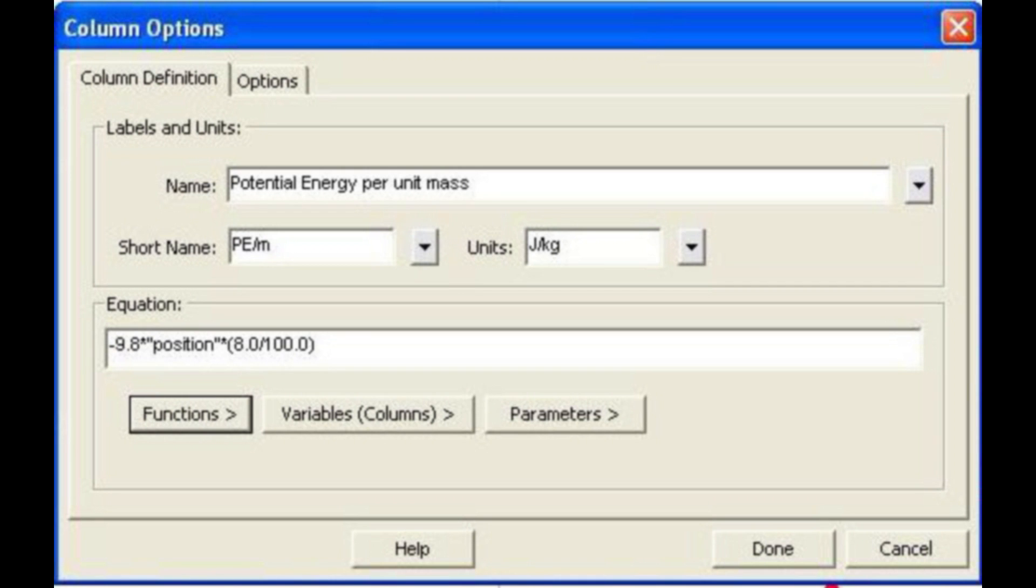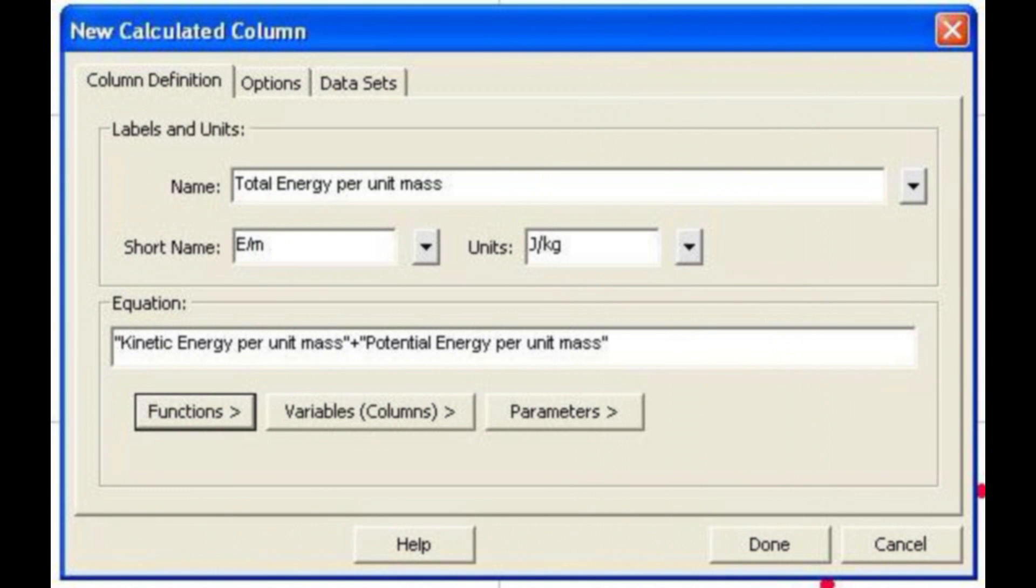The potential energy per unit mass is just a negative of g times position times the sine of the angle theta, here just the ratio 8 over 100. The total energy per unit mass is the sum of kinetic plus potential energies per unit mass.